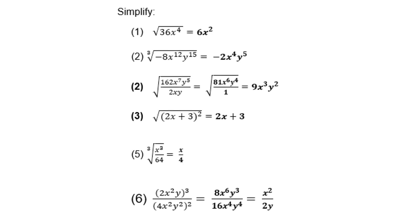Next, simplify the square root of 36x to the power 4. The answer is 6x squared, because you can test: 6x squared times 6x squared is 36x to the power 4. The cube root of negative 8x to the power 12 y to the power 15 will be negative 2, x to the power 4, y to the power 5.